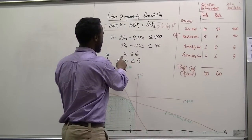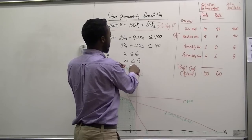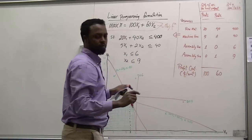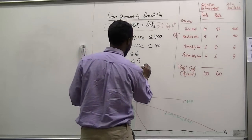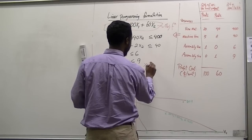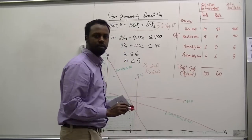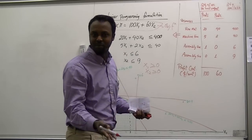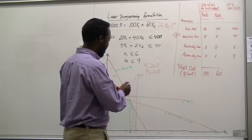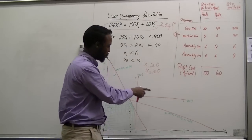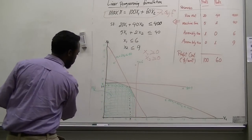Similarly, 5x₁ plus 2x₂ is less than or equal to 40. x₁ is less than or equal to 6, showing the capacity of Assembly 1 for Product 1, and x₂ is less than or equal to 9. One very important additional restriction is that x₁ and x₂ are non-negative — in the business world, we do not expect a negative output, so outputs should be positive.